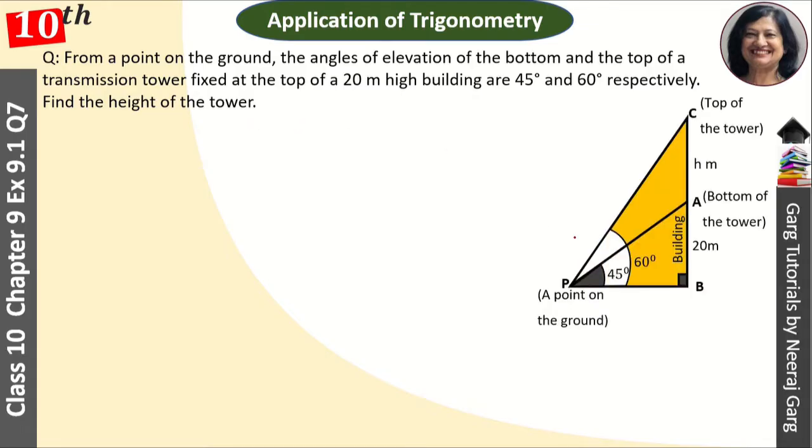We will make a diagram first. This is our diagram. This is AB, this is our building, and this is our tower. The angle of elevation of the bottom is 45 degree and the top is 60 degree. The building height AB is 20 meter given, and height of tower we don't have, so let the height of tower is h. This PB we have taken as X which is the base.